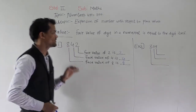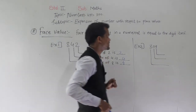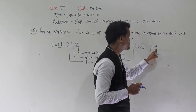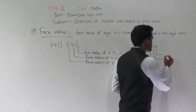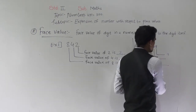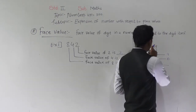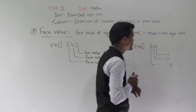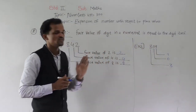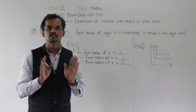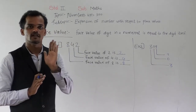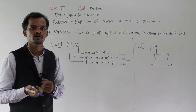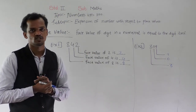One more example: 309. Face value of 9 is 9, face value of 0 is 0 and face value of 3 is 3. Face value does not change — it remains the same. Face value of a digit is nothing but that same digit.